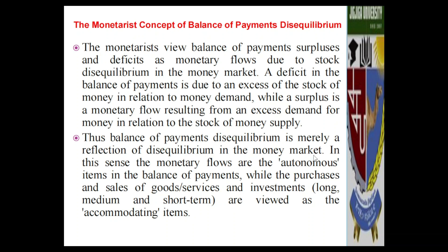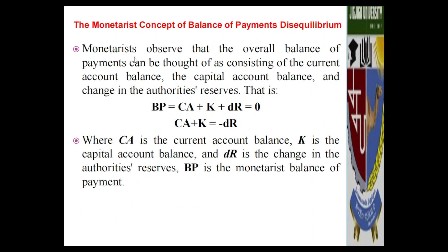A balance of payments disequilibrium is a reflection of disequilibrium in the money market or exchange market. Monetary flows are autonomous items in the balance of payments, while purchases and sales of goods, services, and investments are accommodating items. The overall balance of payments consists of the current account balance, the capital account balance, and the change in authorities' reserves. In equilibrium, the change in reserves dR equals zero.